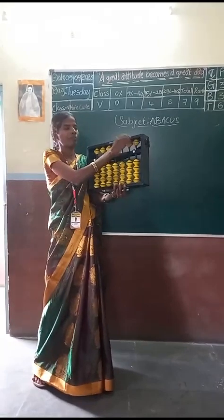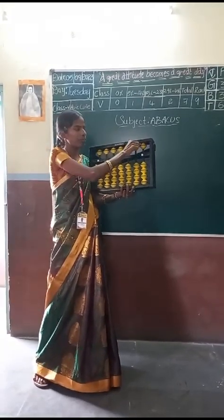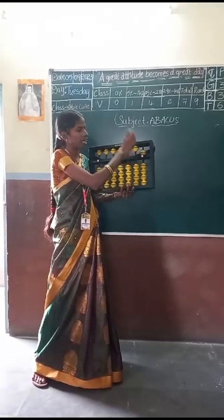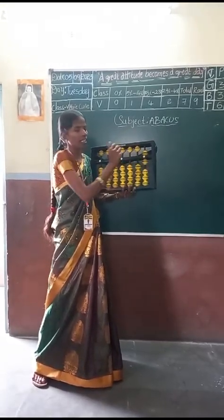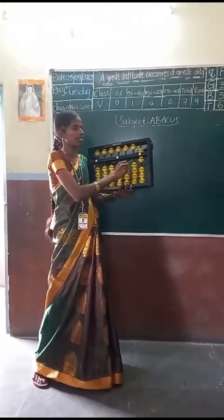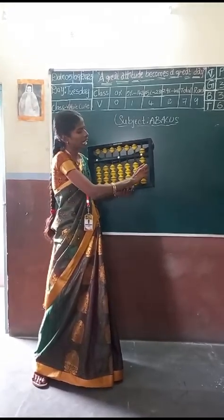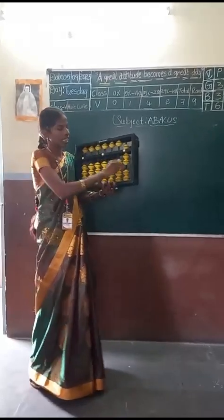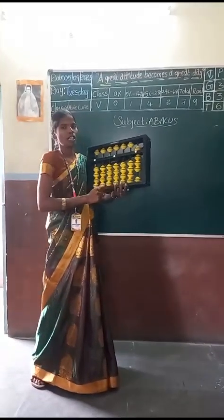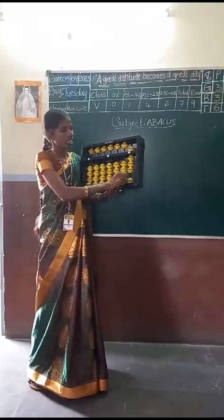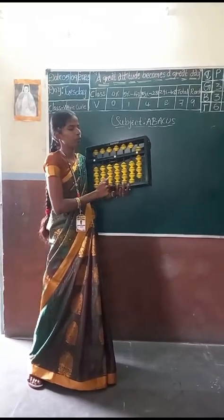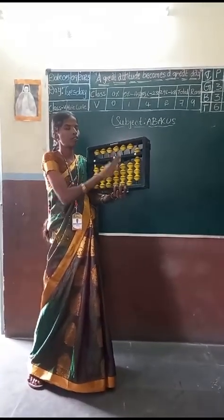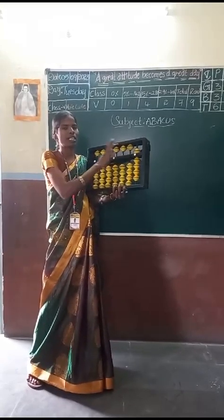What about the upper bead? This upper bead — 1 bead value is 5. Now, this is 5. I am adding 1 — the value is 6. Adding 1 more — the value is 7. Adding 1 more, and 1 more — total value is 9. We have to keep the 9 numbers in 1 space.